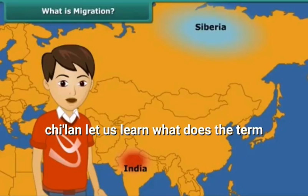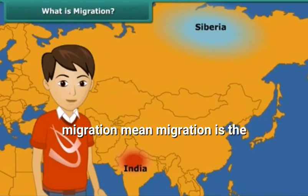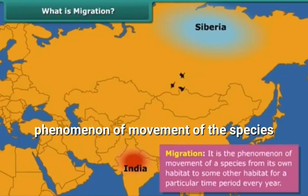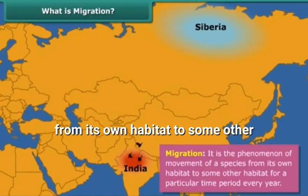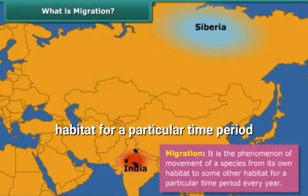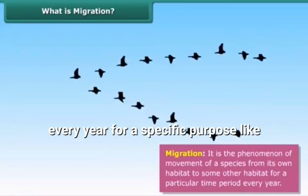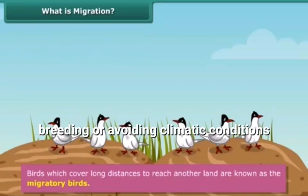Children, let us learn what the term migration means. Migration is the phenomenon of movement of a species from its own habitat to some other habitat for a particular time period. Every year, for a specific purpose like breeding or avoiding climatic conditions, birds migrate from Siberia to India.